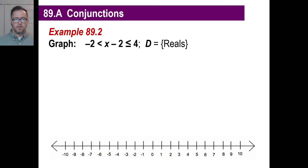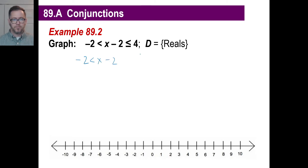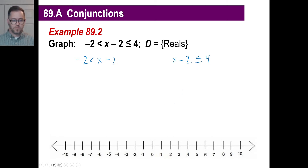Let's try another one. Sometimes they will set these up for you as one long inequality, not even separated by anything. What you're going to do is break these up into two chunks. So you'll take negative 2 is less than x minus 2. And you'll also do x minus 2 is less than or equal to 4. Probably should have written those in different colors.